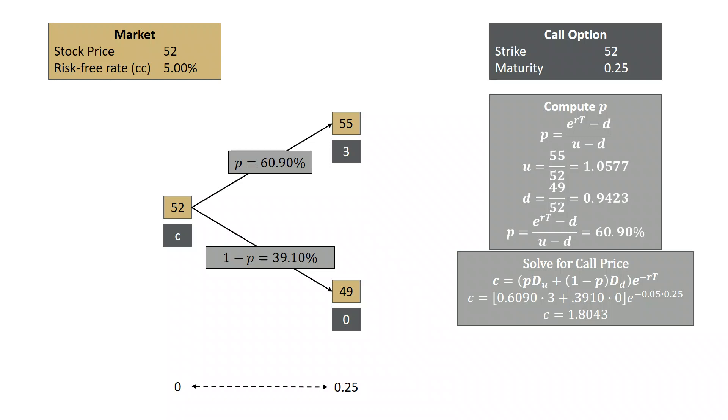Now, this is not a particularly realistic scenario, and I'm going to try to add a little bit more realism. One of the problems with this is there are only two possible outcomes for the stock. So what I'm going to do now is extend this model to a two-step binomial tree.